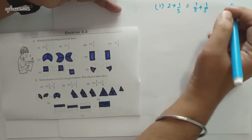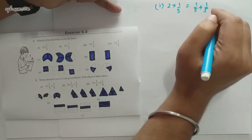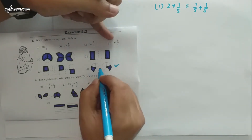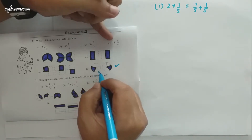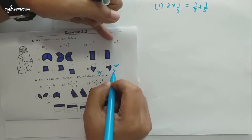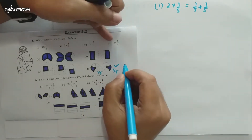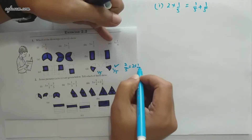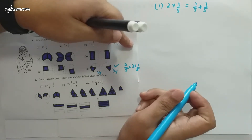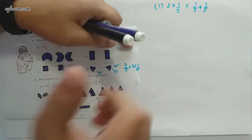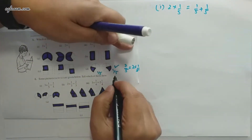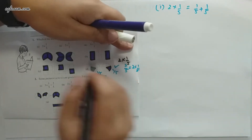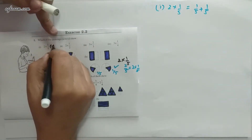Can you see any figure where one-fifth of five parts is highlighted? Yes — here we have one of the five parts highlighted, so that is 1/5, and over here also it's 1/5. So this is actually 2/5, which equals 2×(1/5). The answer is figure d.